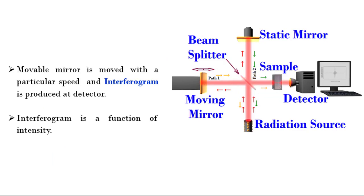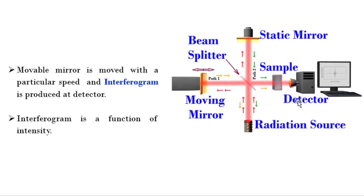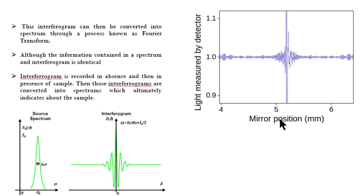In order to carry out measurement, the movable mirror is moved at a particular speed, producing a result at the detector called an interferogram, which is a function of the intensity of radiation reaching the detector. This interferogram can then be converted into a spectrum through a process known as Fourier transform. Though the information contained in the spectrum and interferogram is identical, scientists find it difficult to interpret an interferogram in terms of molecular structure. So the interferogram measured by FTIR is converted back to a spectrum by applying Fourier transform.